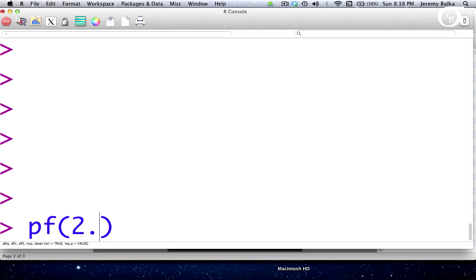So if I put in 2.448, and I have to give it the appropriate degrees of freedom, and we had 3 degrees of freedom in the numerator and 14 degrees of freedom in the denominator, then this is going to give me the area to the left of 2.448 under an F distribution with 3 and 14 degrees of freedom.